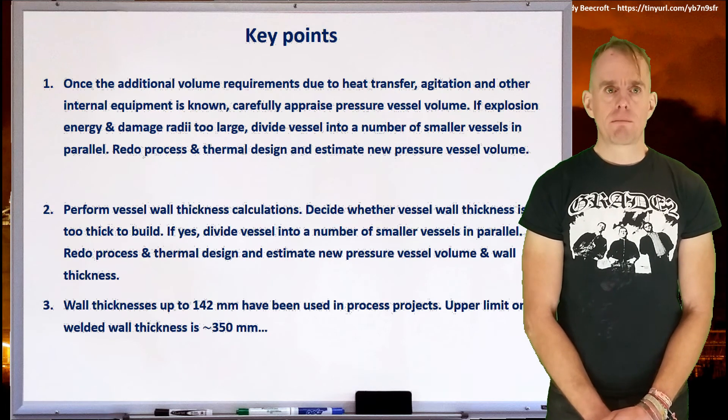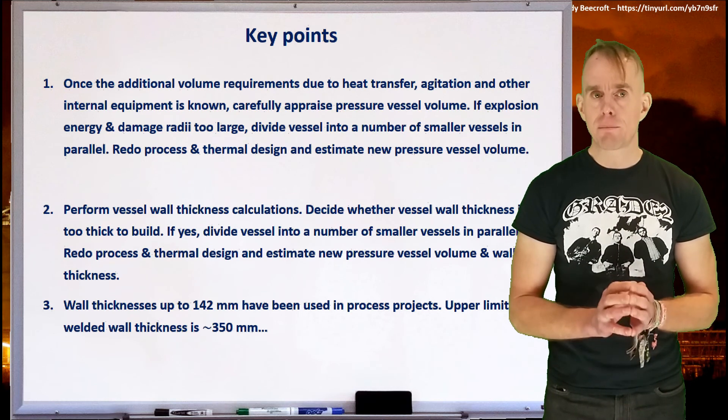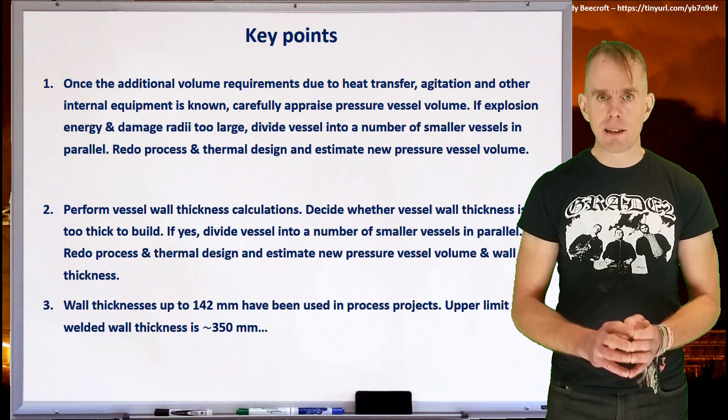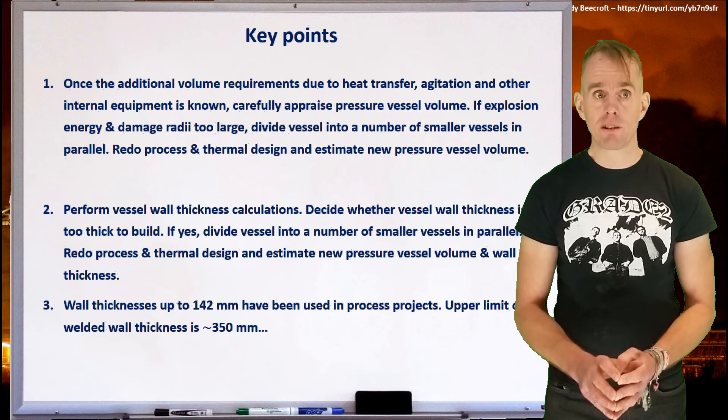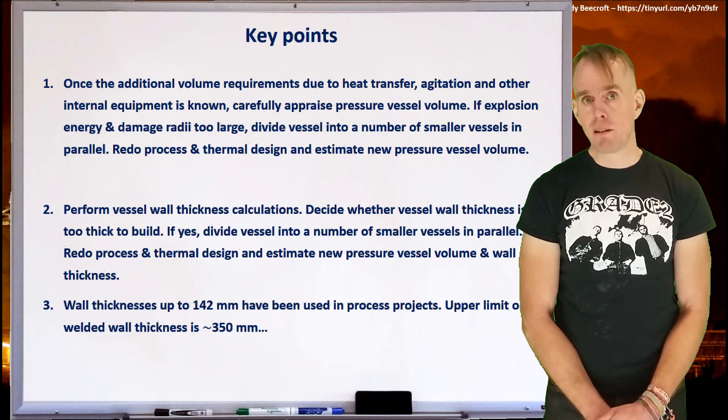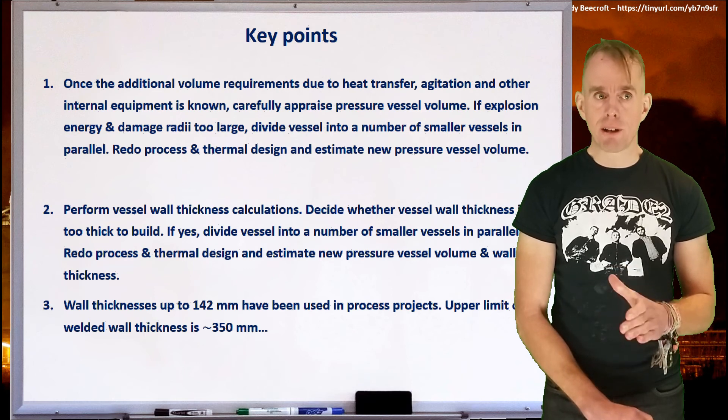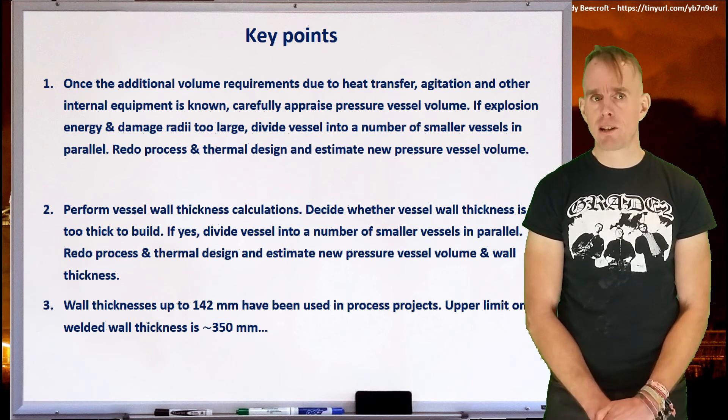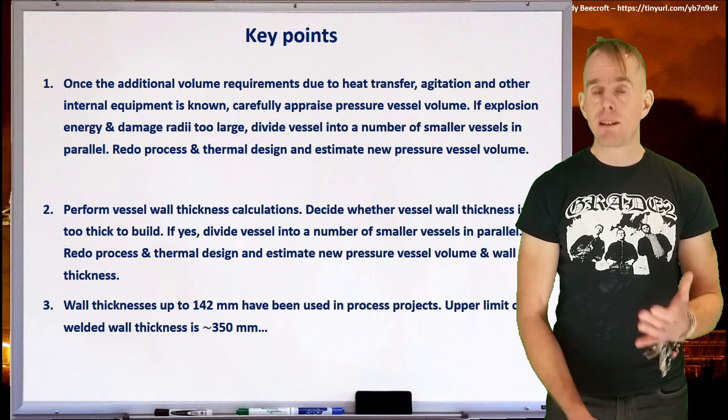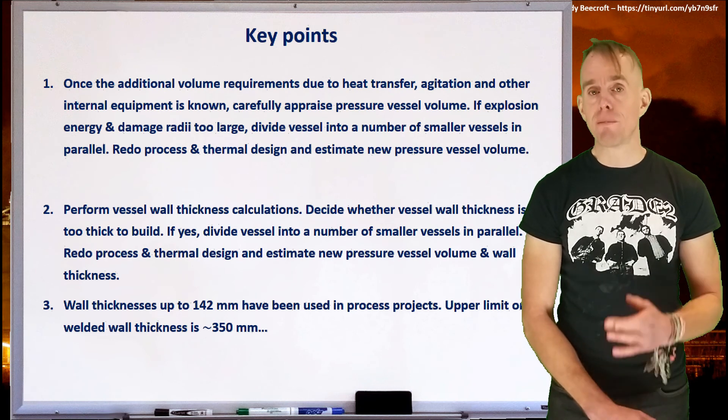So let's recap a few key points. So once the additional volume requirements due to heat transfer, agitation and other internal equipment is known, carefully appraise that pressure vessel volume. Look at your explosion energies. Look at the damage radii for certain given consequences. And if the safety case presented is just too hazardous, divide the vessel into a number of smaller vessels, run them in parallel, redo your process and thermal design and estimate a new pressure vessel volume and then reappraise it. If you're satisfied your vessel is sufficiently safe enough, perform your wall thickness calculations. Then again, appraise the result. Decide whether your vessel wall thickness is just simply too thick to build. If it is, divide your vessel into a smaller number of parallel vessels, redo the process and thermal design and estimate the new pressure vessel volume and wall thickness.